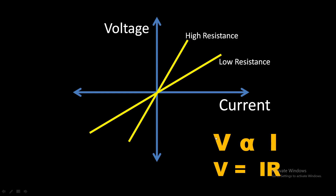Here, V is measured in volts and I is in amperes — SI units. And here you can see R. R is the constant of proportionality. So, V equals IR is the mathematical representation of Ohm's Law.